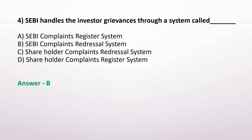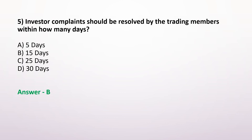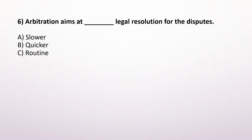Next question. Investor complaints should be resolved by the trading members within how many days? Option A. 5 days, Option B. 15 days, Option C. 25 days, Option D. 30 days. The correct answer is Option B. 15 days.